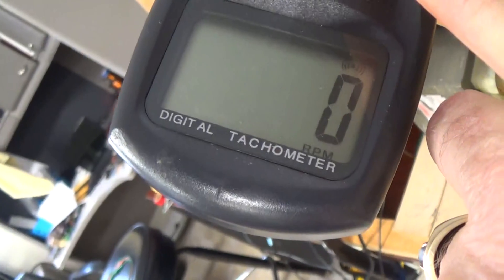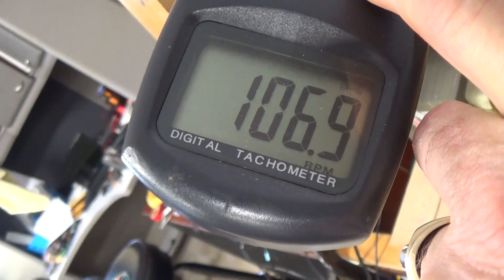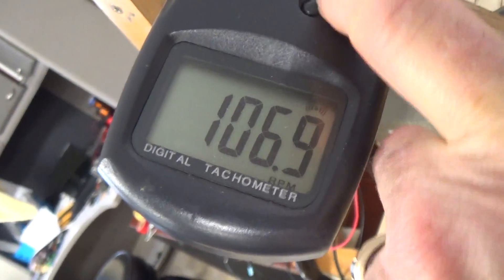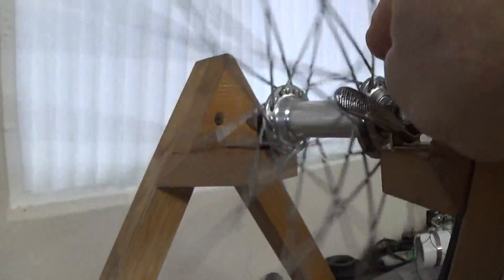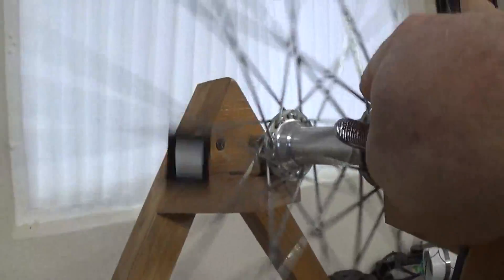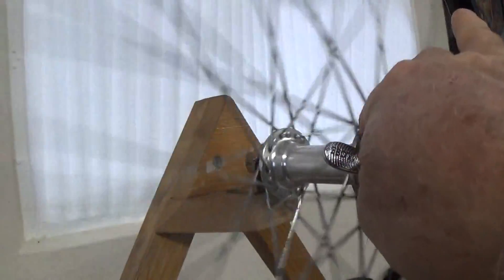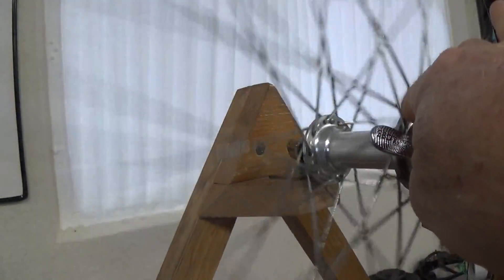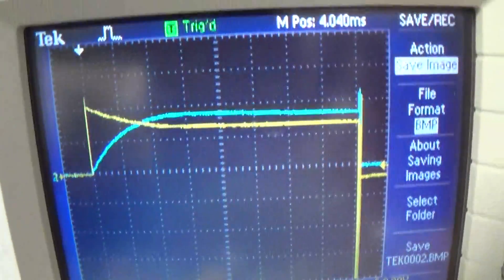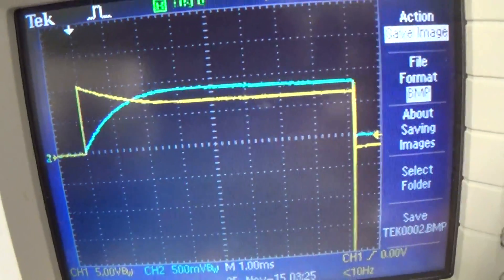So right now we have about 107 RPM. And I will use my finger, without sticking it in the spokes, and just rub it here. And you'll start hearing the rotor reducing. Now I'll give you a scope shot of what it looks like.